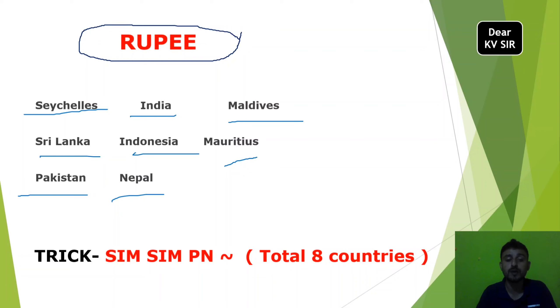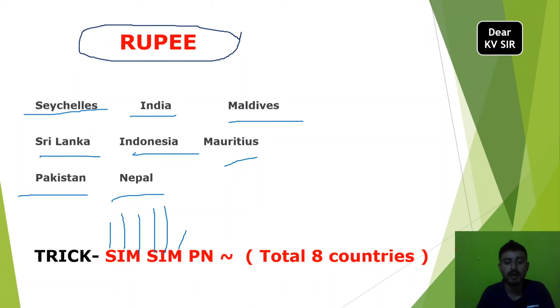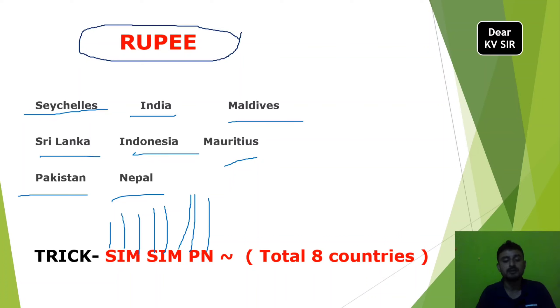The mnemonic is SIMSIMPN. S for Seychelles, I for India, M for Maldives, S for Sri Lanka, I for Indonesia, M for Mauritius, P for Pakistan, and N for Nepal.